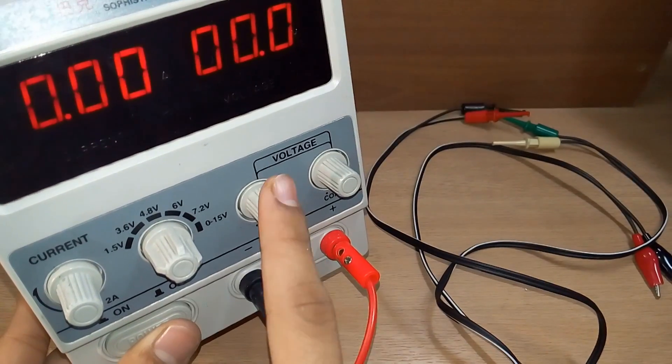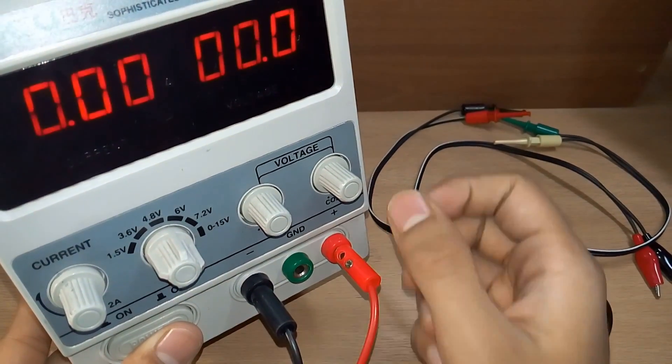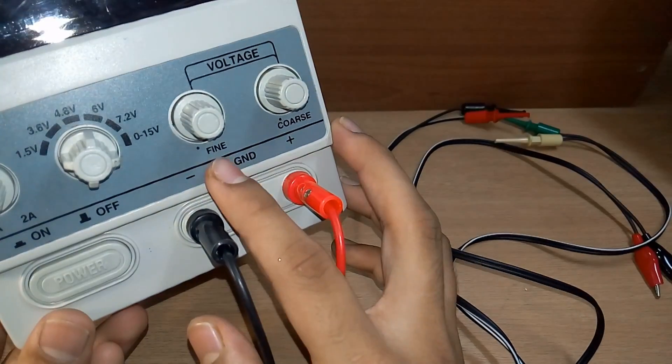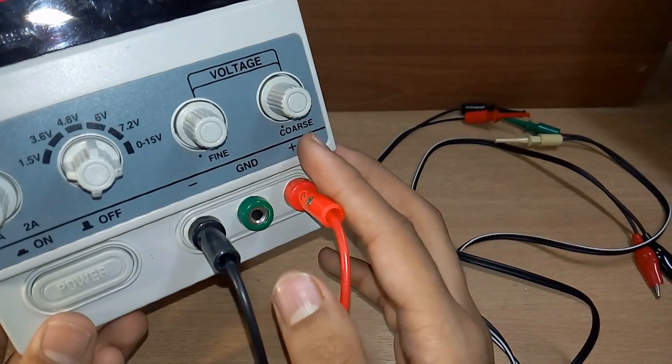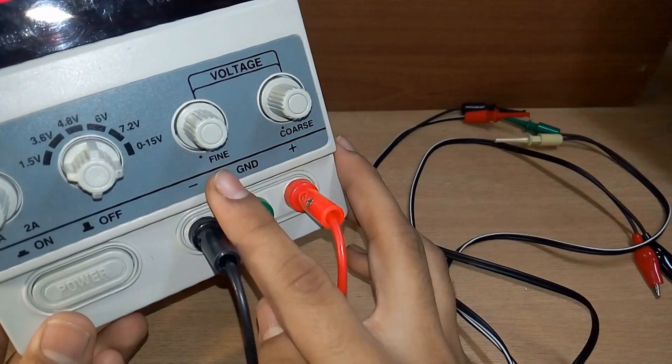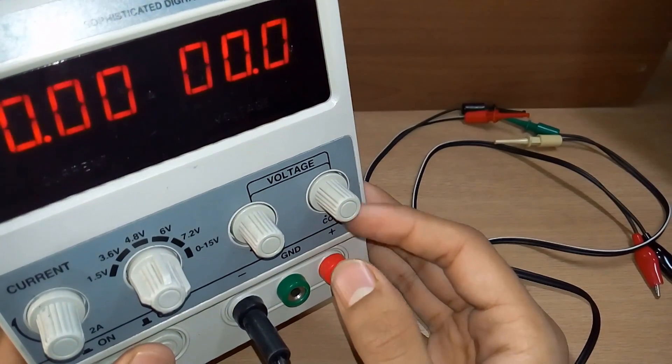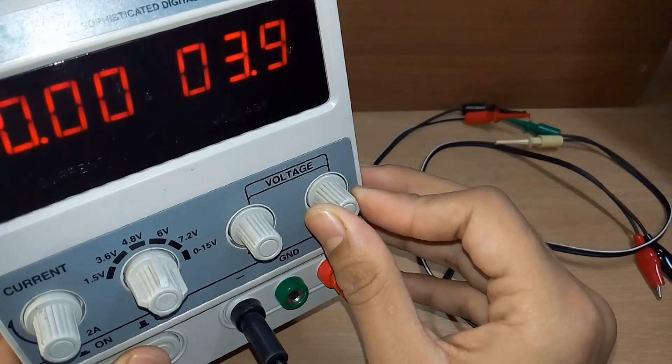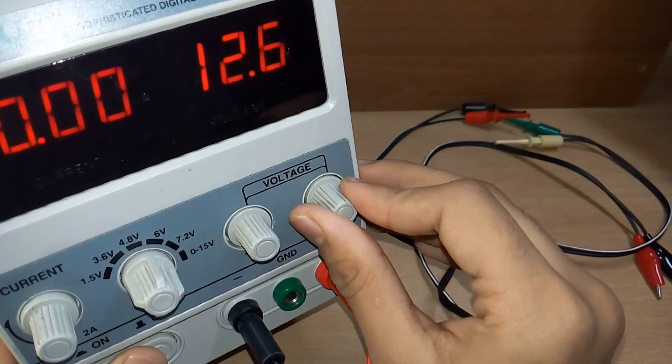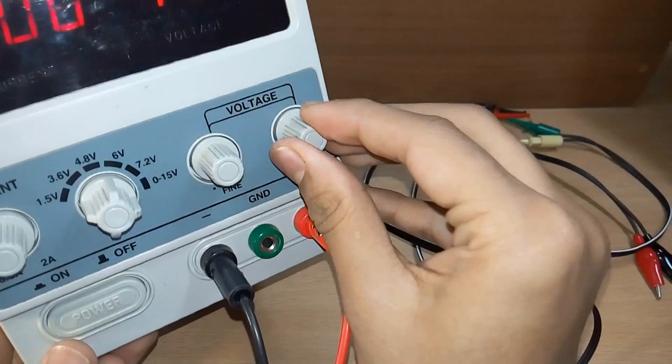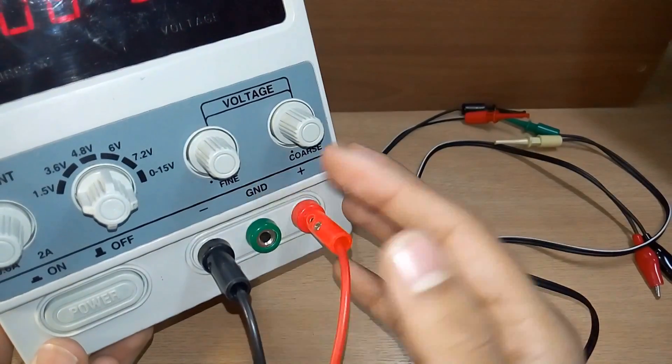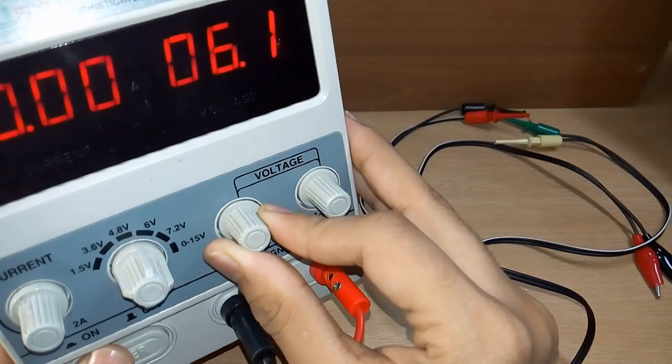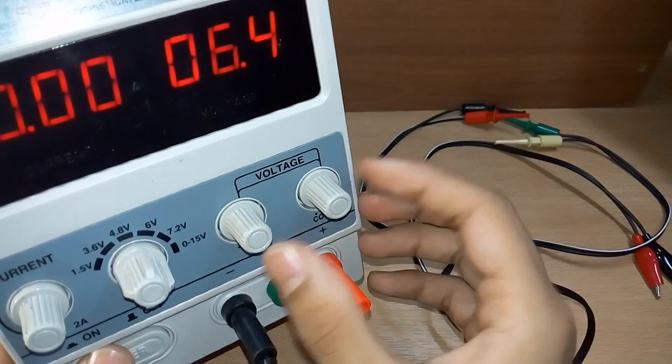This one is for coarse setting and this one is for fine setting. We see coarse steps up the voltages by 0.5 volts, while the fine voltage knob can increase your voltage by 0.1 volt steps. So that's a pretty good idea.